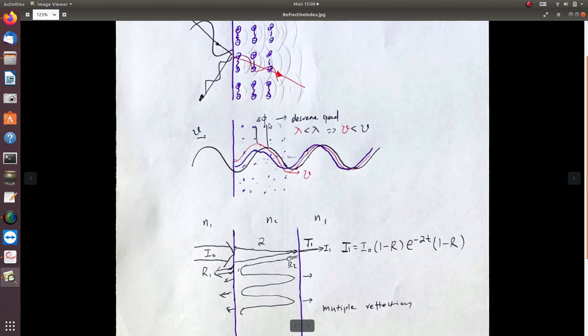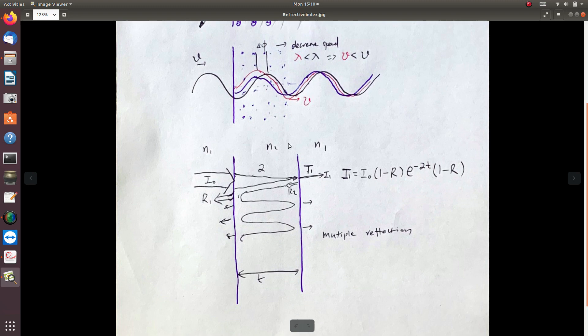Which means it has a phase lag, resulting in a shorter wavelength than the primary light. But the frequency is the same, so the velocity, the speed, is a little bit less.